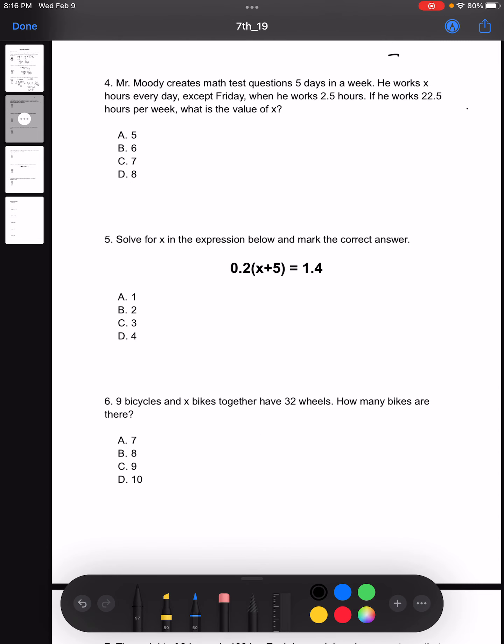Let's move on to these. So we know that he works 5 days a week. He works on Monday, Tuesday, Wednesday, Thursday, and Friday. We know that Monday through Thursday, Mr. Moody works X hours. And we can call this from Monday to Thursday is 4 days. And in those 4 days, we know he works X hours. Meaning we could write that as 4 times X, where X is the number of hours he works. And we know on Friday, he works 2.5 hours.